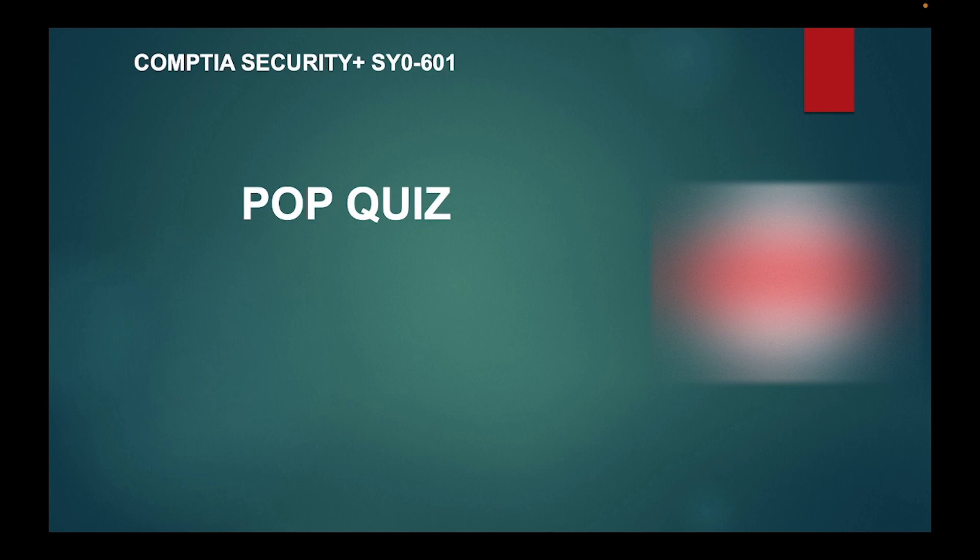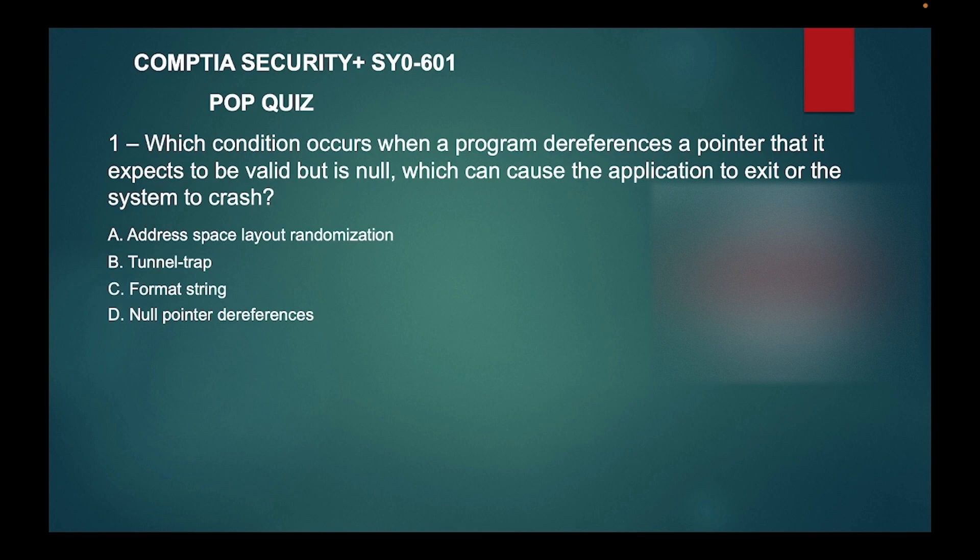Question one: which condition occurs when a program dereferences a pointer that it expects to be valid but is null, which can cause the application to exit or the system to crash? A: Address space layout randomization, B: Null trap, C: Format string, or D: Null pointer dereferences.